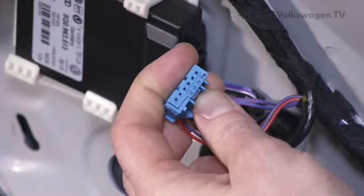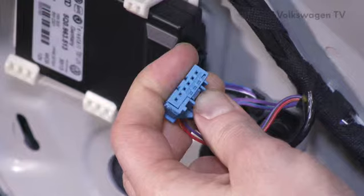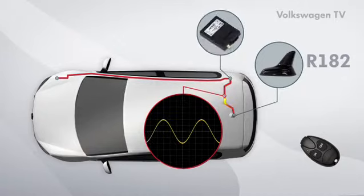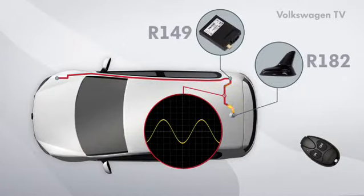Pin 1 is connected to the plus terminal and pin 2 to ground. R149 converts the signal received from R182 into a bus message.